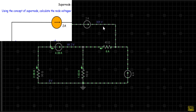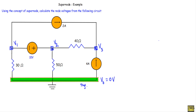Now look between node one and two — they are non-reference nodes, and between node one and two I have a known voltage source of 10 volts. As between two non-reference nodes we have a known voltage source, I can say that node one and two will form a supernode.